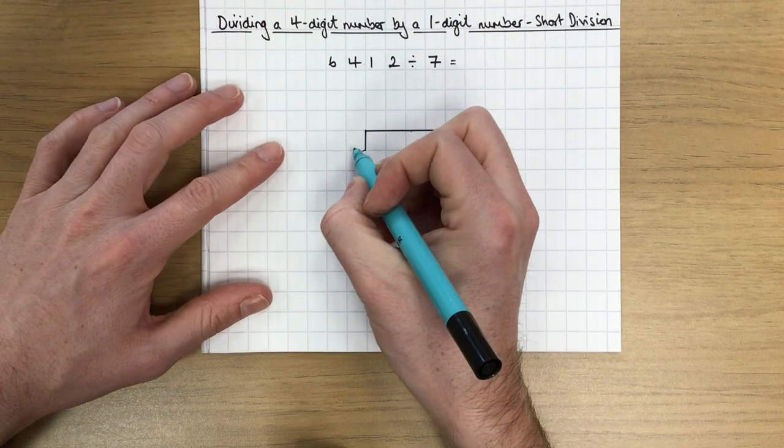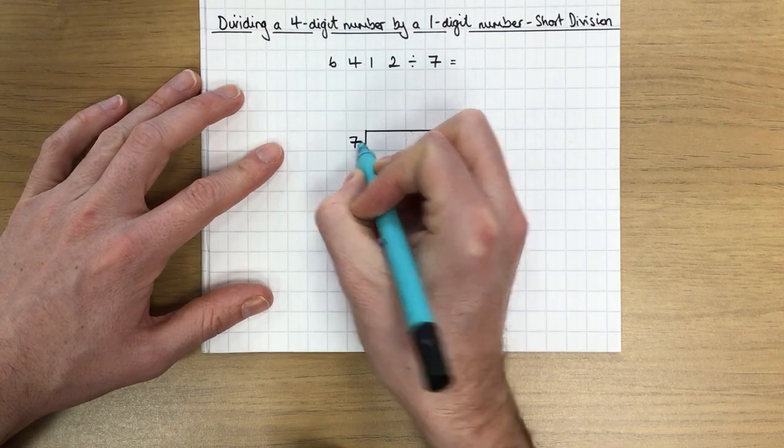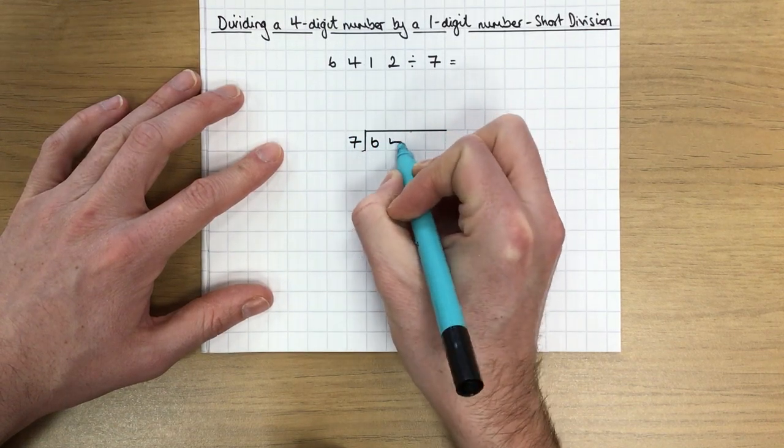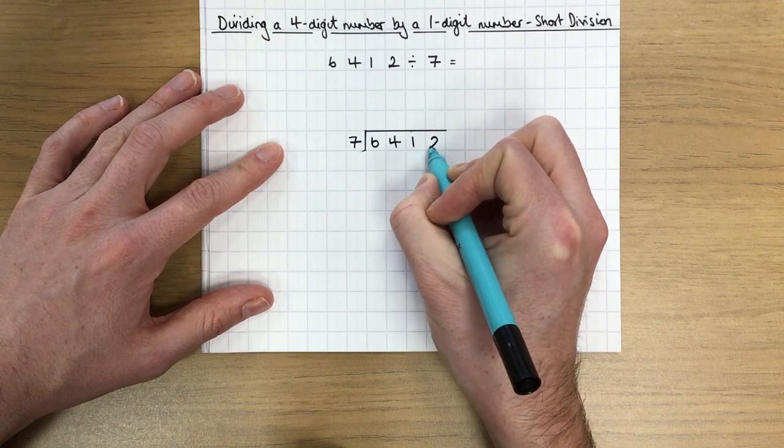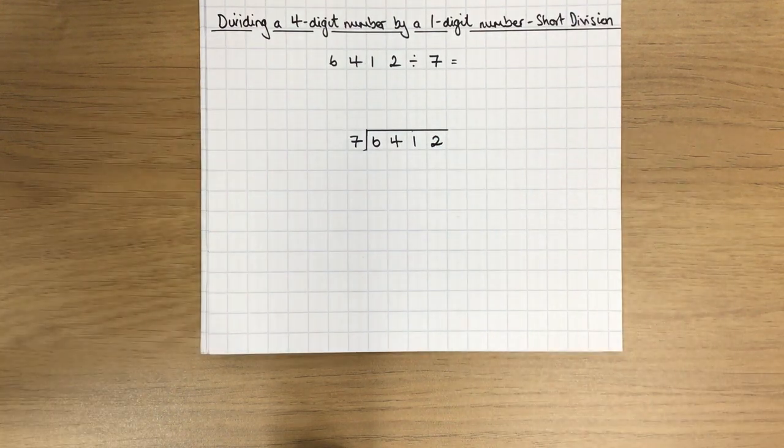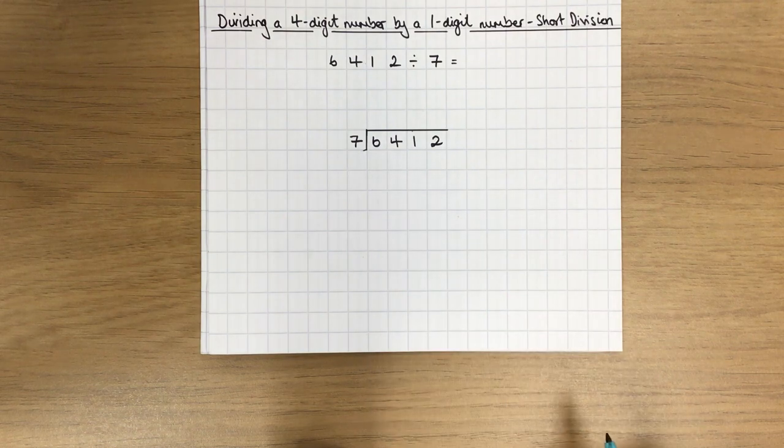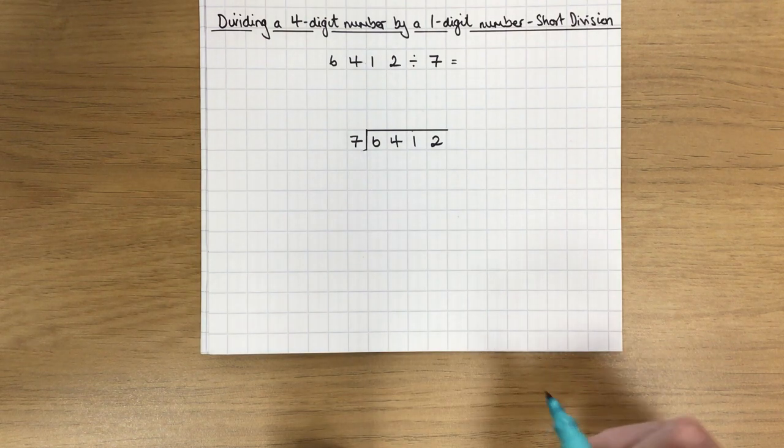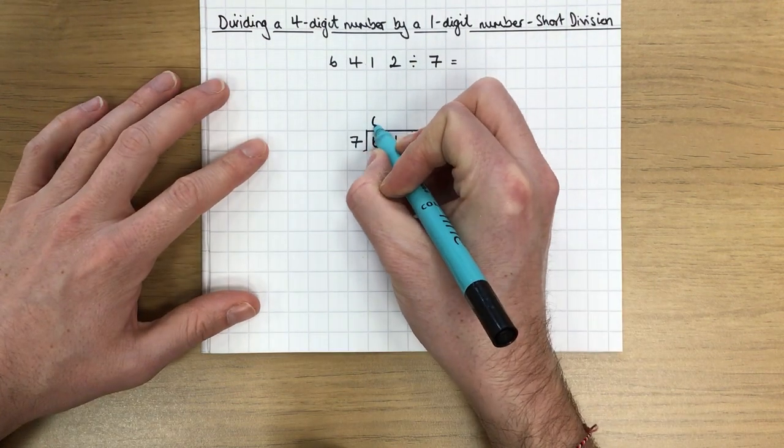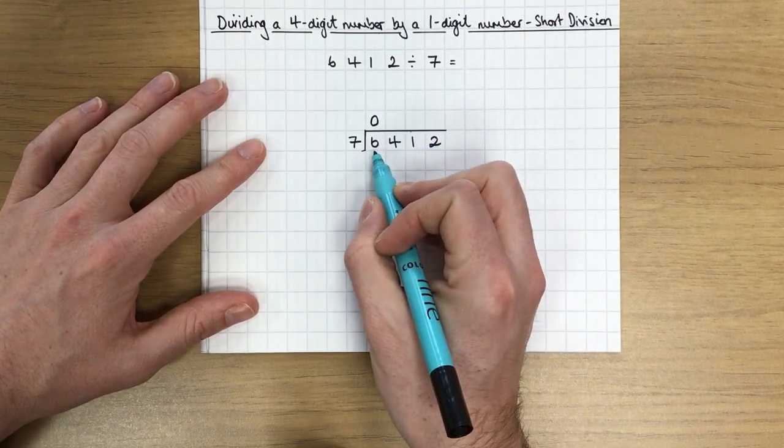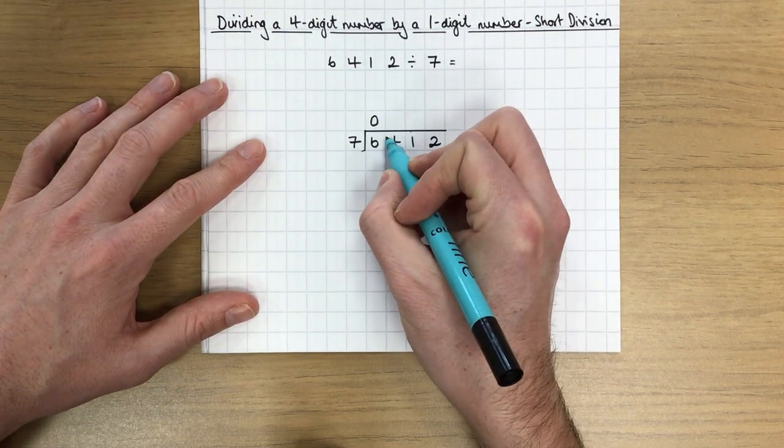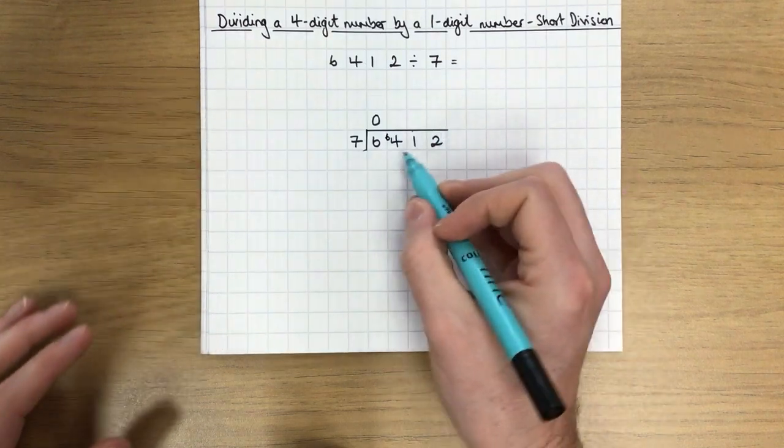First thing I need to do is write my divisor, which is 7, and then the 6,412 is the number I am dividing into. First step is 7 doesn't go into the 6. So I have to write the 0, but I can't just forget about my 6,000 here. I have to carry that forward to make 7 into 64.